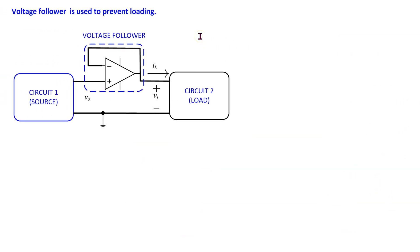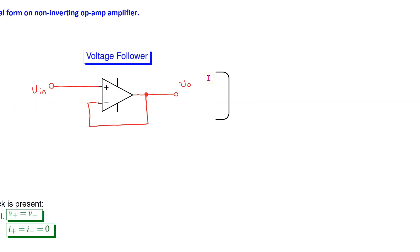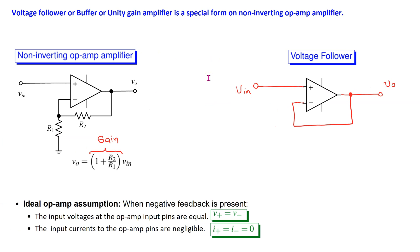Loading is an undesirable effect and we can prevent it by using a voltage follower connected between source and load. The voltage follower now supplies the current to the load. It copies the voltage V_naught from the output of the source to the input of the load without disturbing the source. The voltage follower is also called a buffer or a unity gain amplifier.